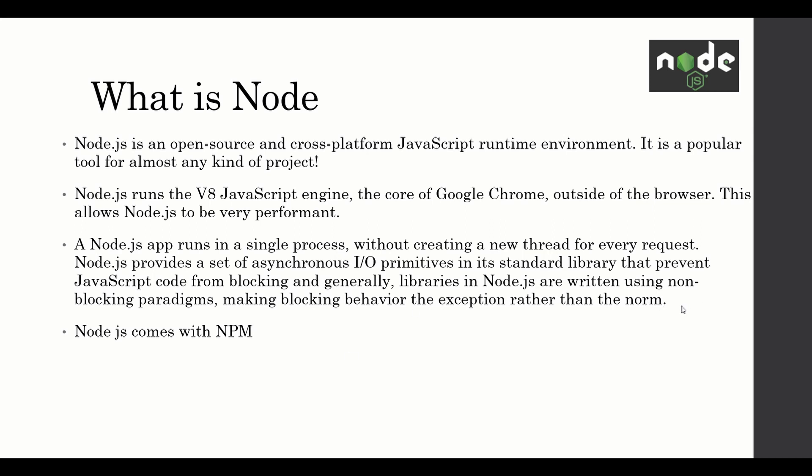Libraries in Node.js are written using non-blocking paradigms, making blocking behavior the exception rather than the norm. Node.js works similarly to how the browser works — the browser makes JavaScript asynchronous through web APIs. JavaScript by default is a synchronous process; it can only do one thing at a time. But through web APIs from the browser it can be asynchronous, and Node.js has similar functionality.